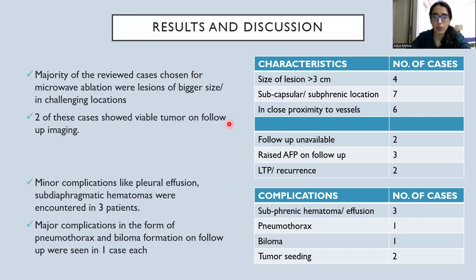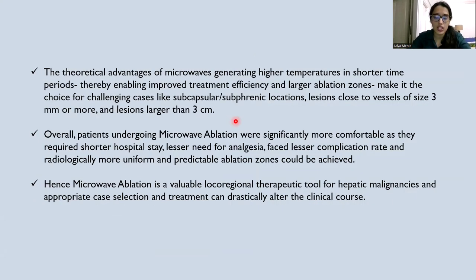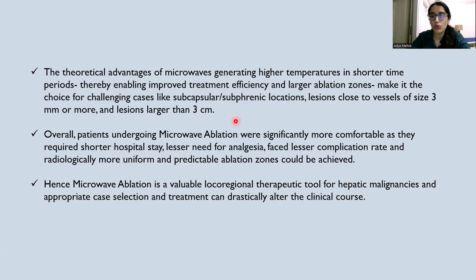The majority of cases chosen for microwave ablation were of bigger size or in challenging locations, and 2 of these cases showed viable tumor on follow-up imaging. Minor complications like pleural effusion and sub-diaphragmatic hematomas were seen in 3 patients; major complications in the form of pneumothorax and biloma formation were seen in one case each. The theoretical advantages of microwaves — generating higher temperatures in a shorter time with higher treatment efficiency and larger ablation zones — make it the choice for challenging cases. Overall, patients are more comfortable with shorter hospital stay, lesser need for analgesia, and lower complication rates. Microwave ablation is a valuable local regional therapeutic tool for hepatic malignancies, and appropriate case selection can drastically alter clinical outcomes.